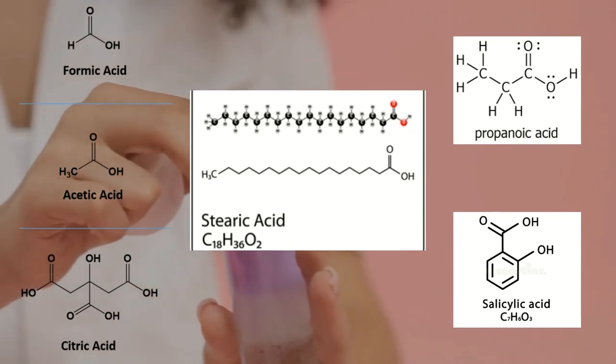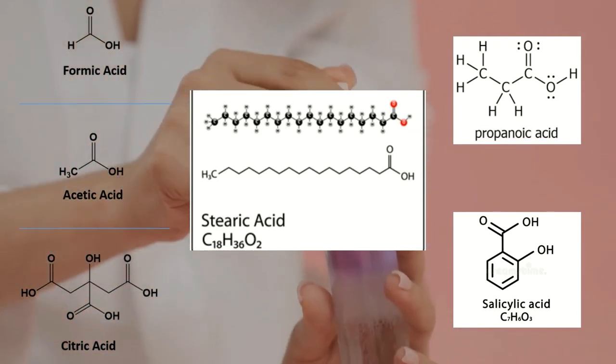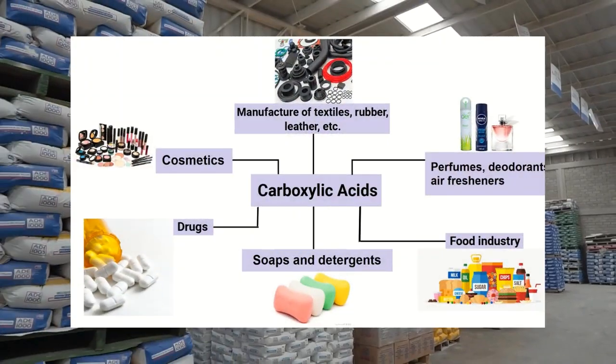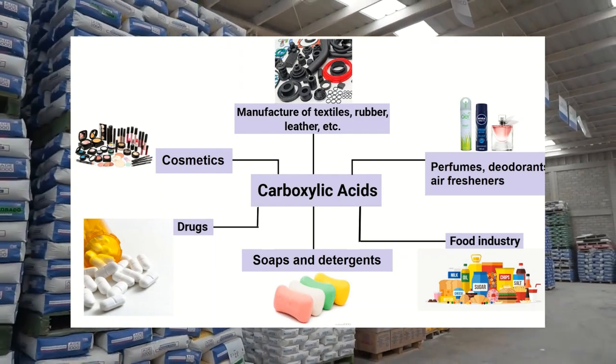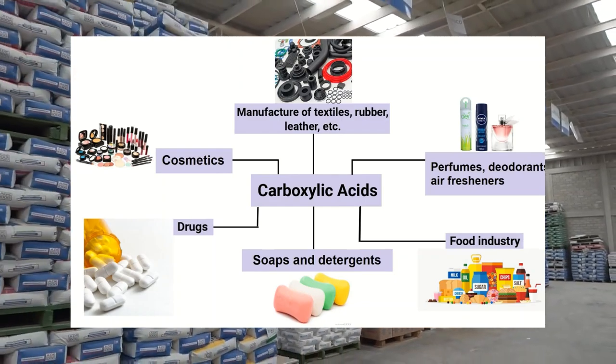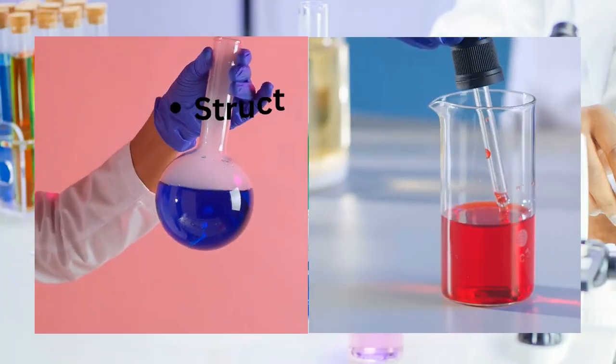Some of the most common types of carboxylic acid include formic acid, acetic acid, and salicylic acid. These compounds are widely used in industry and in everyday life, from solvents to pharmaceuticals.